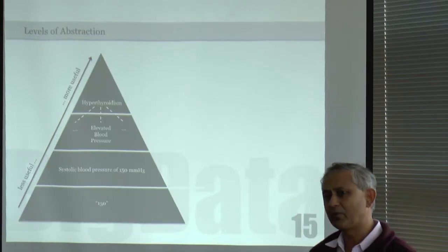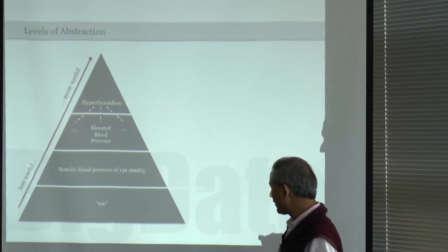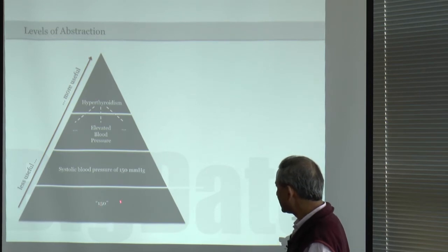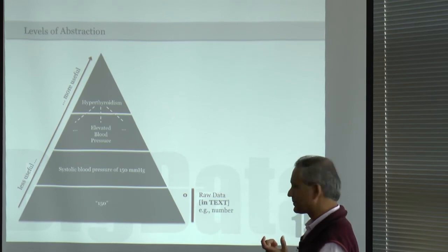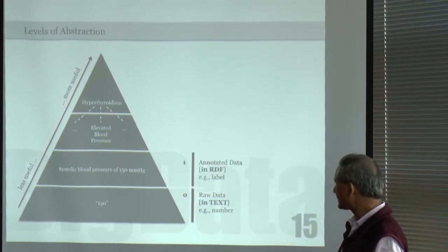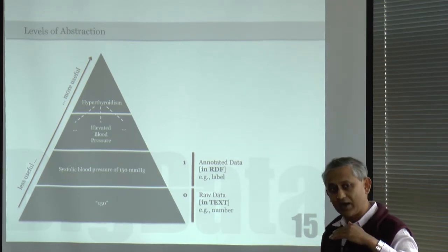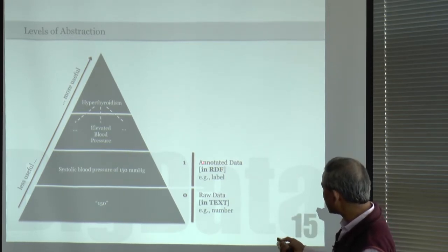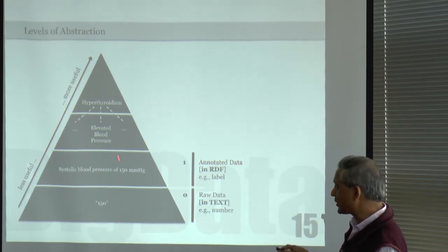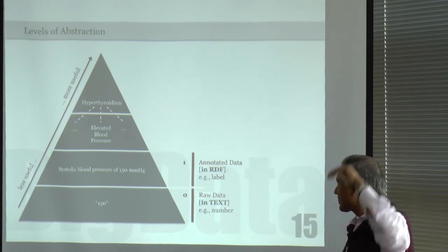Another slide provides a different understanding of levels of semantic interpretation. Something says '150' — that is simply a string or number, raw data. Then somebody labels it: it is a systolic blood pressure of 150 mmHg, represented for example in RDF. Then you have something that says that is an elevated blood pressure. There is an NIH clinical standard that tells you how to interpret blood pressure — systolic pressure above 140 is called elevated blood pressure, and you can model the concept of elevated blood pressure in OWL.